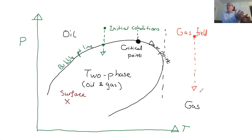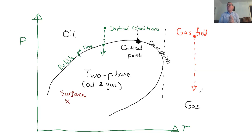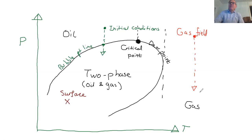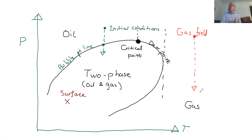Because we start at typically hundreds of atmospheres and can go down to a few tens of atmospheres, roughly speaking the mass of gas in a given volume is proportional to pressure. So we can achieve 90–95% pressure recovery, which is pretty good for a gas field.